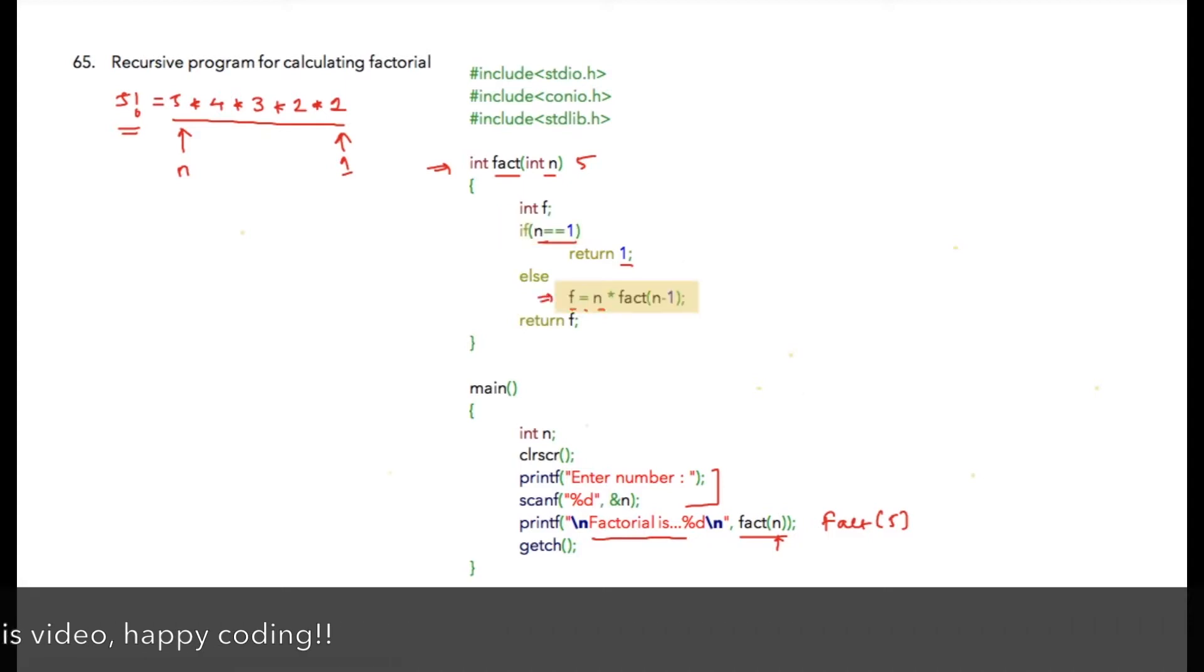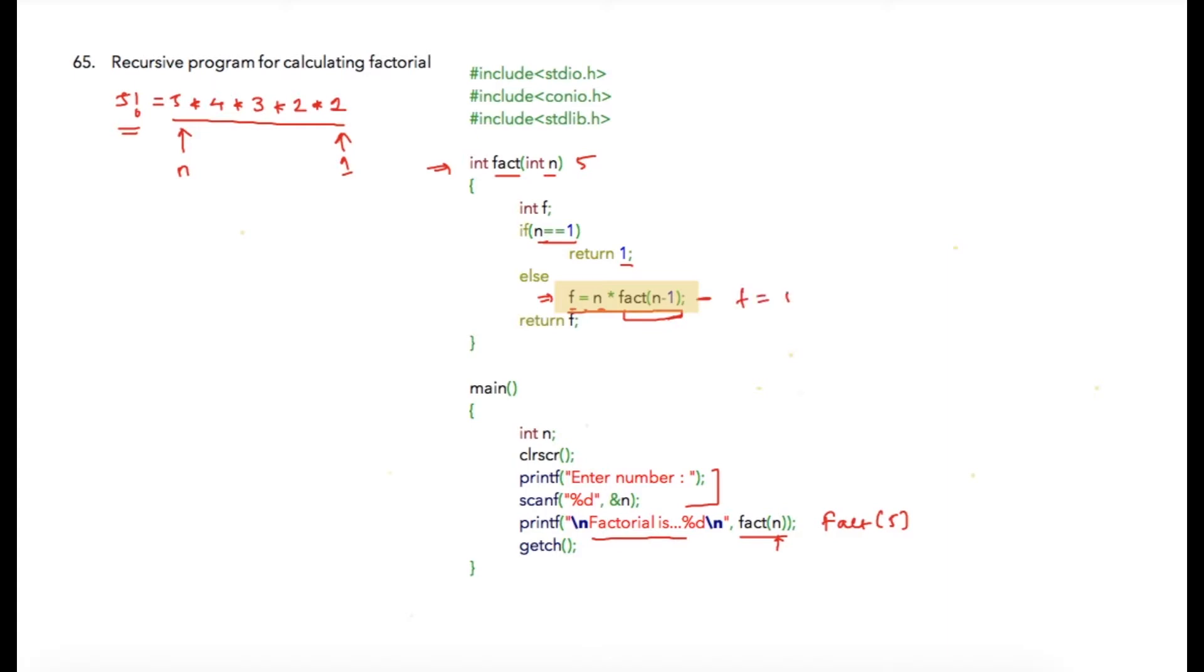What is happening here is f equals 5 multiplied by factorial of 4 (that is, n minus 1). Again, the same conditions will be checked. Now 4 is passed over here, so this condition is false again, and what we have now is 4 multiplied by factorial of 3. The same process goes on.